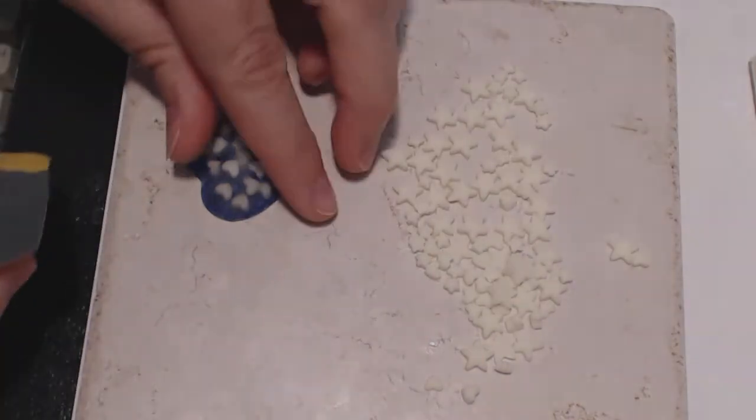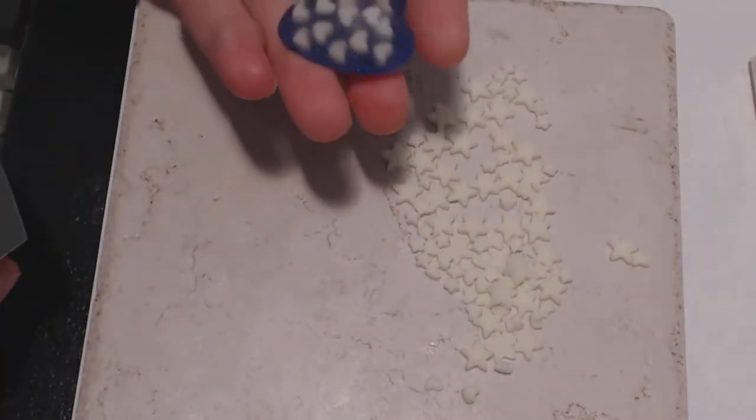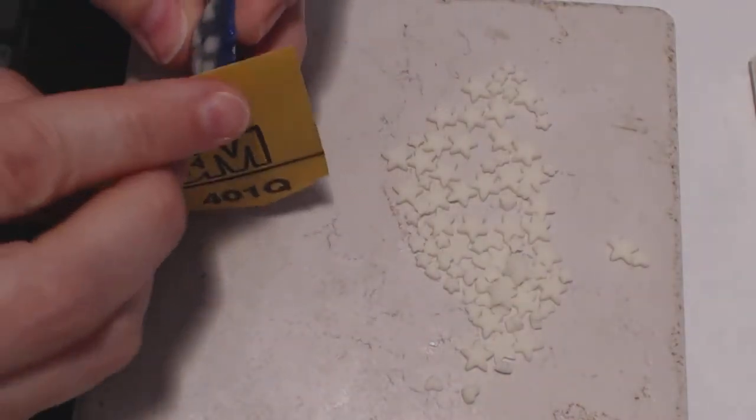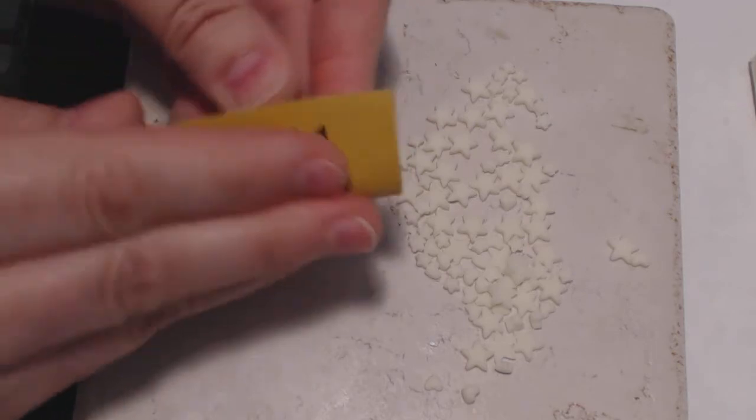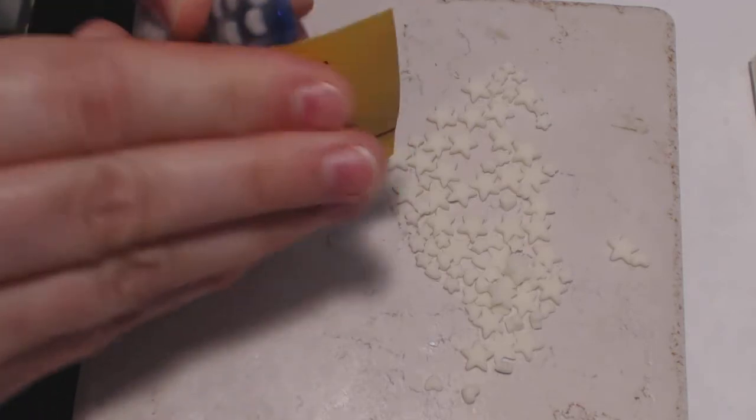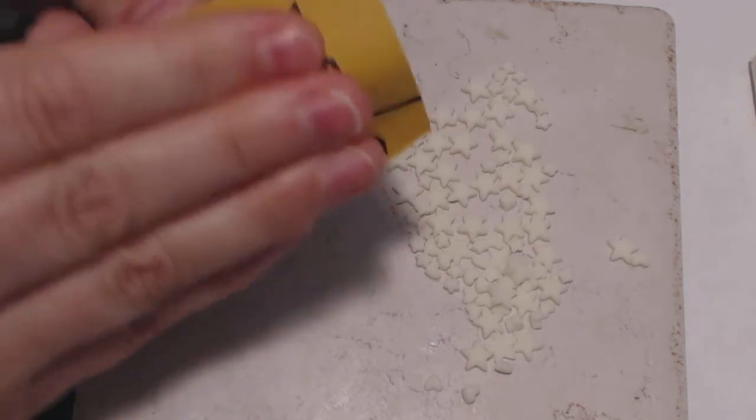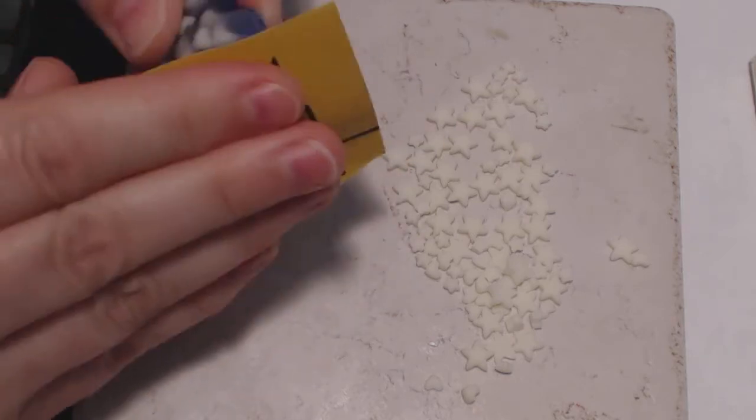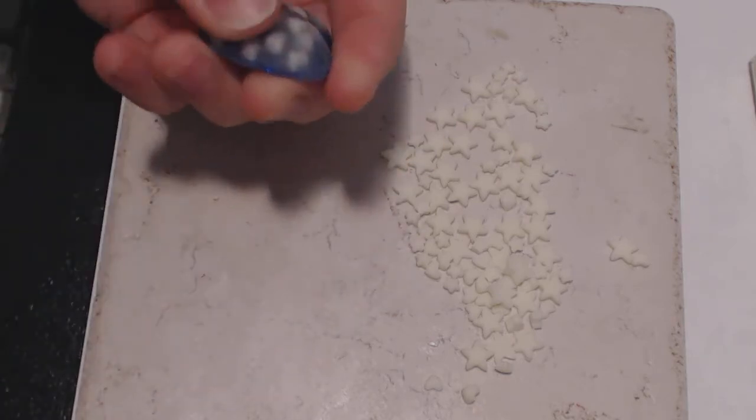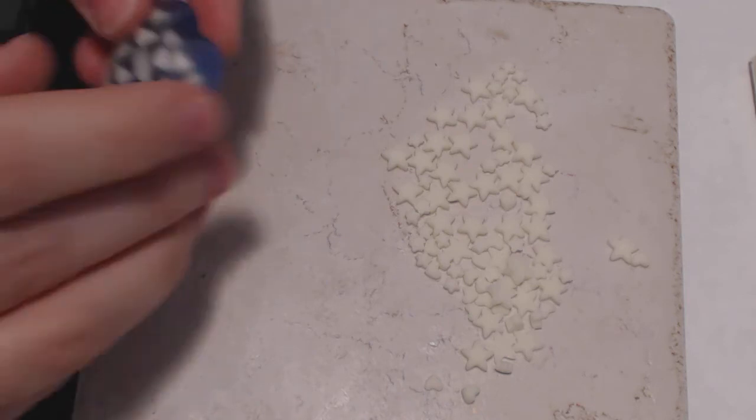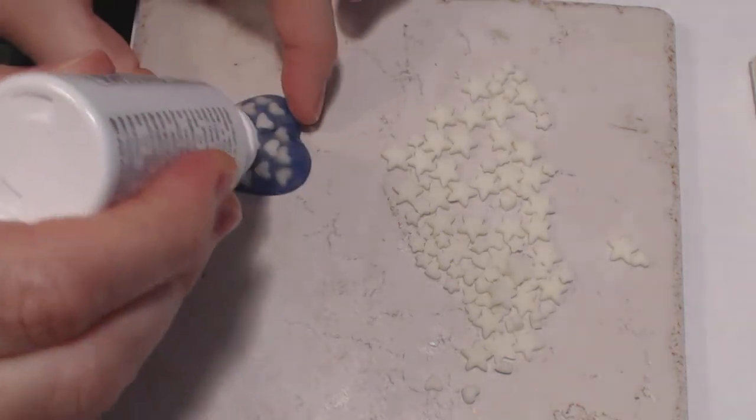You just want to buff up the surface a little bit—it gives the glaze something to grab onto so it won't pull away and back into itself. I'll wipe that off, and then I just take a little bit of the UV resin and put it on there.